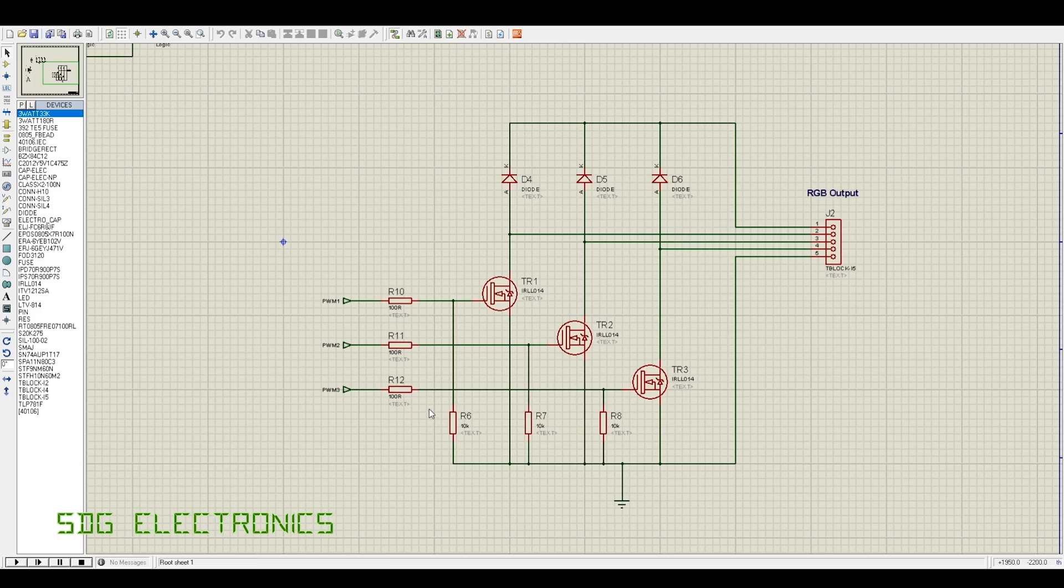We've got pull down resistors - written as 10k but they could be anything up to one megaohm with these MOSFETs. While the main board is initializing, this just stops the MOSFETs from floating up and turning on.